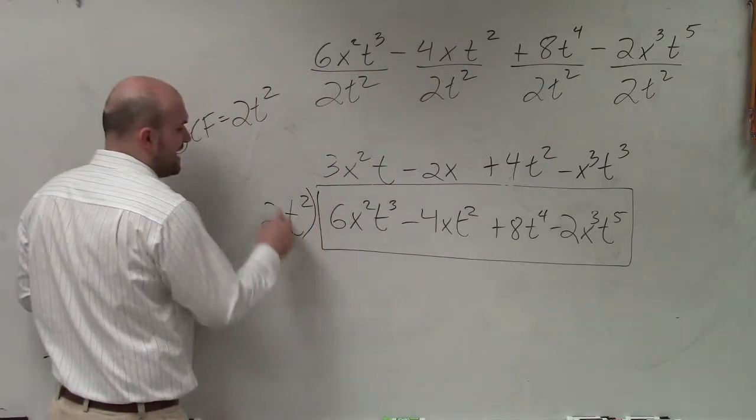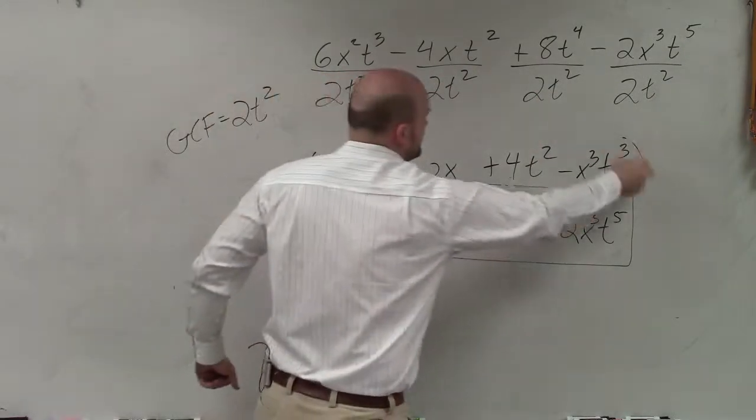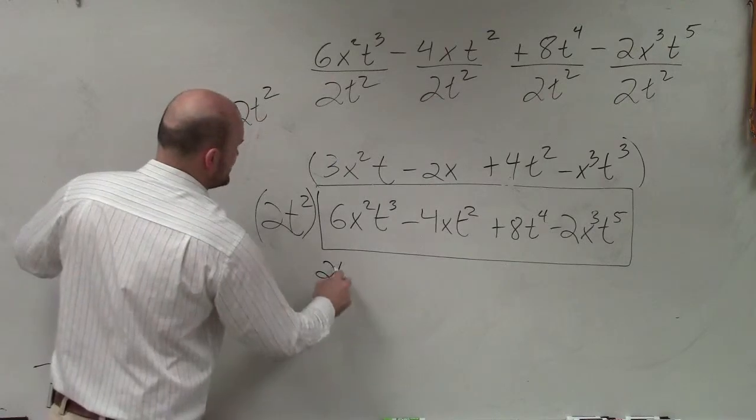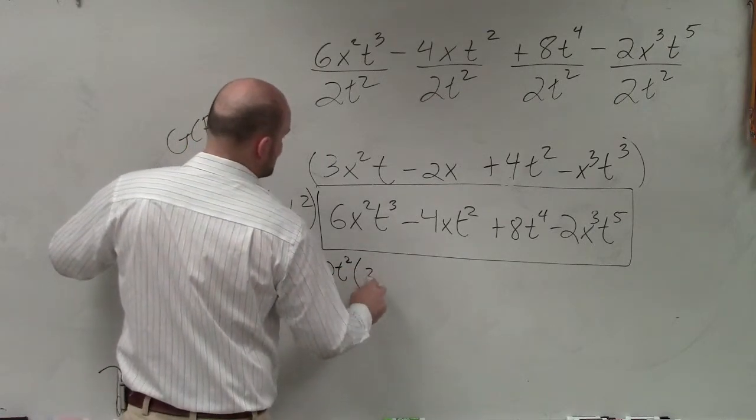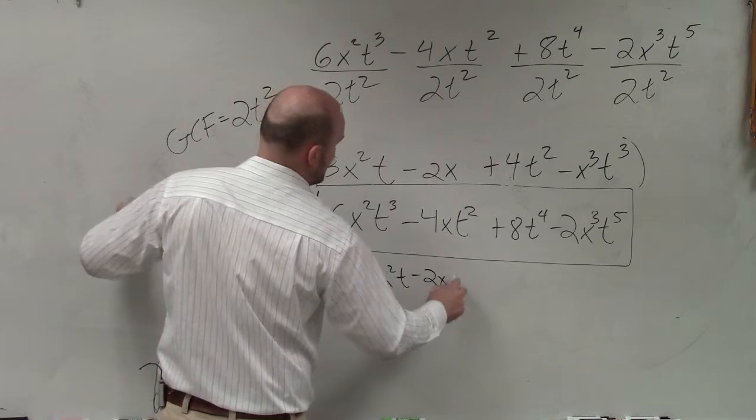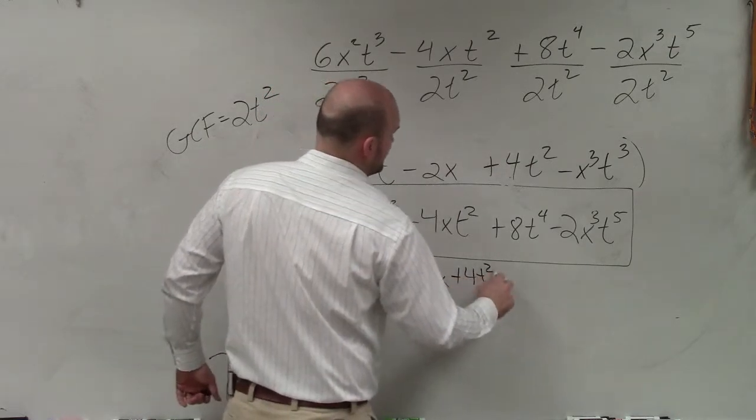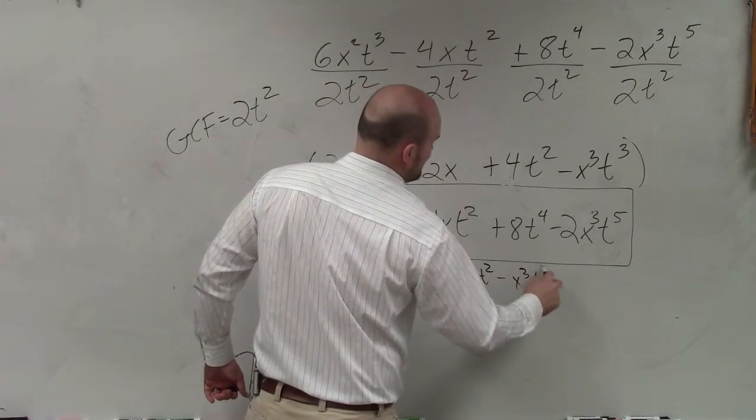So therefore, again, the factoring is what are you multiplying by? So your final answer is 2t squared times 3x squared t minus 2x plus 4t squared minus x cubed t cubed.